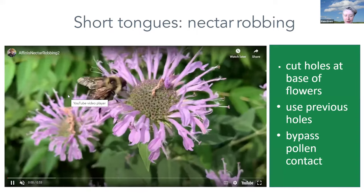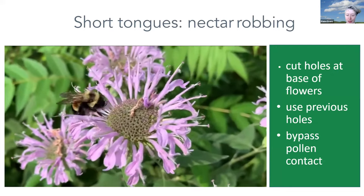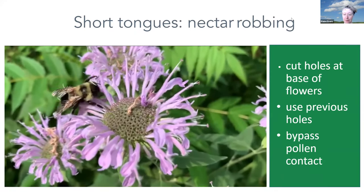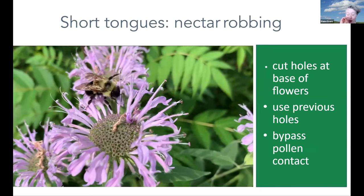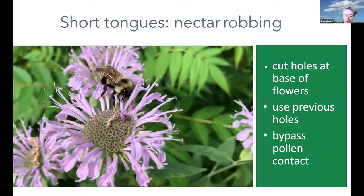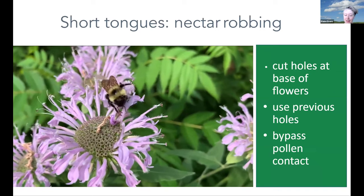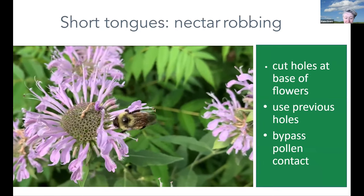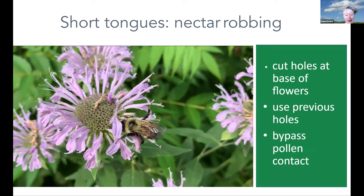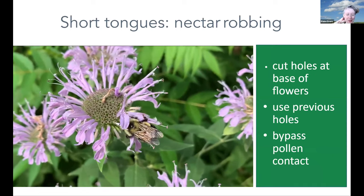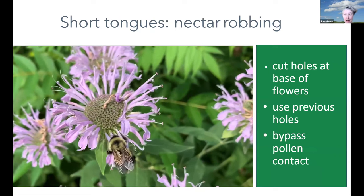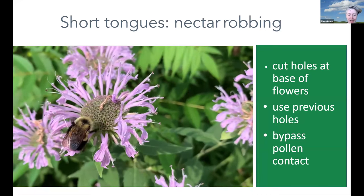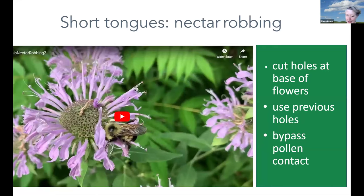There is a workaround some bees use called nectar robbing. Shorter-tongued bees will cut a hole toward the bottom of longer tube flowers and stick their tongue in to access nectar without going through the regular entrance — they can also use holes previously made by other bees. This bypasses pollen collection, so they're not acting as great pollinators this way. The rusty patch bumblebee is known for being a nectar robber.